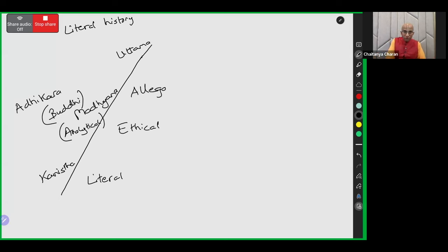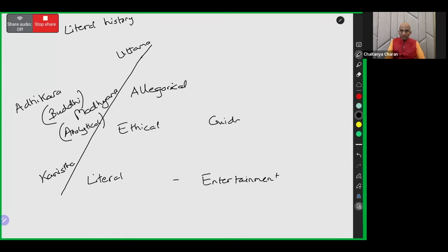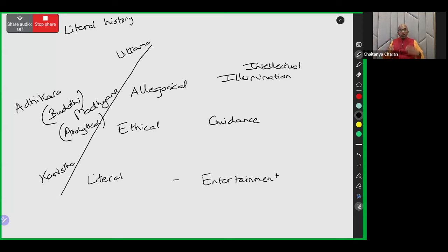Beyond that is the allegorical level. We look at the descriptors themselves — not allegorical per se, but carrying symbolic meaning, giving intellectual illumination. At the literal level, people are primarily interested in entertainment. At the ethical level, people are interested in guidance — what can I learn from it? Then at the allegorical level, there is some illumination of symbolic meaning. In our tradition also, we have the idea of Ravan representing lust. So at the allegorical level, the key question is not just 'who is Ravan?' but 'what is Ravan?'